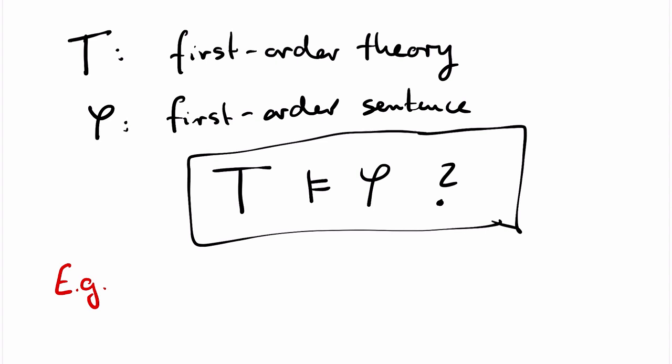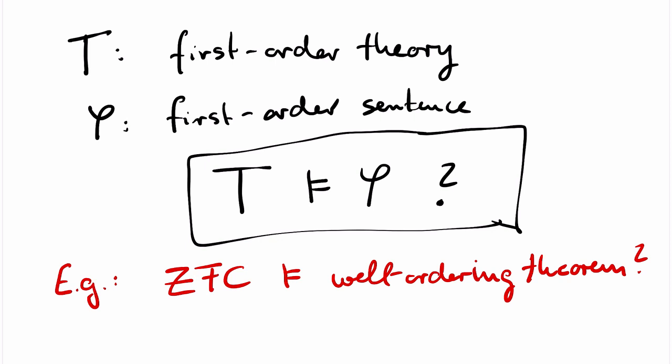For example, if T is the theory ZFC and φ is the well-ordering theorem, then the answer would be yes. Or, as another example, we might want to know whether ZF implies the axiom of choice. We can replace the axiom of choice by any mathematical statement that you are interested in.